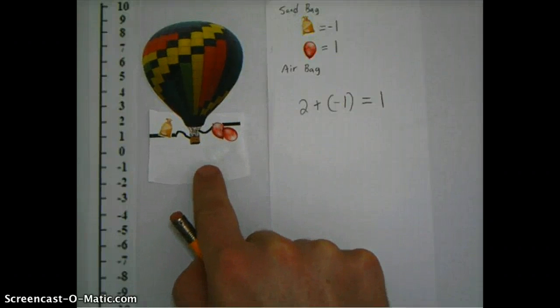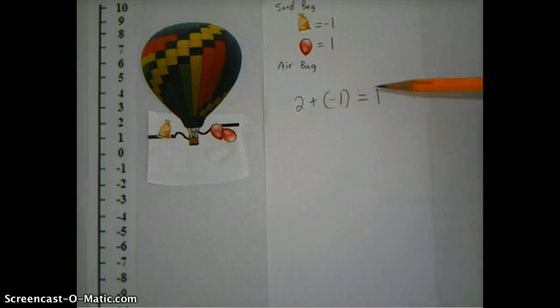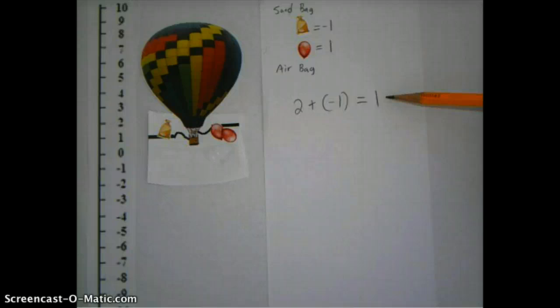And so what's my final answer here? I have two plus minus one, giving me an altitude total of one, a net altitude, after I put those both together.